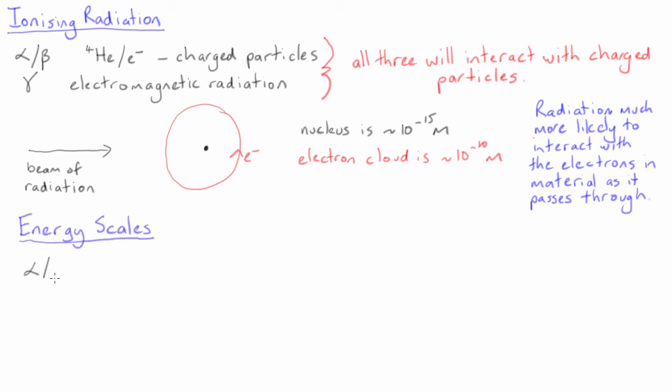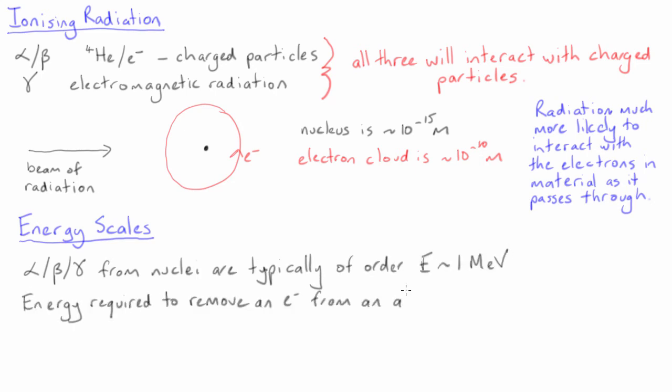Now consider the relevant energy scales. Typical nuclear radiation is of the order of an MeV in energy, whereas the energy required to remove an electron from the atom is around 10 eV.